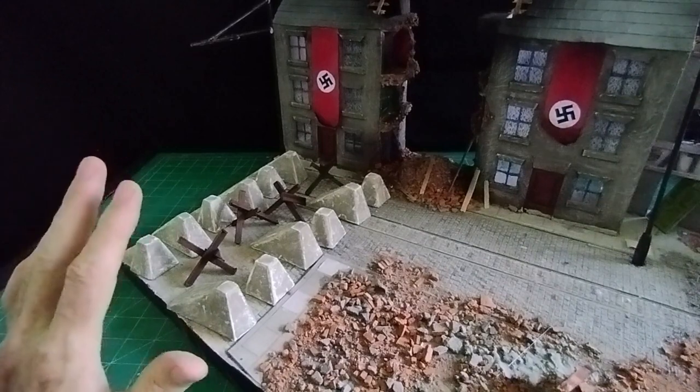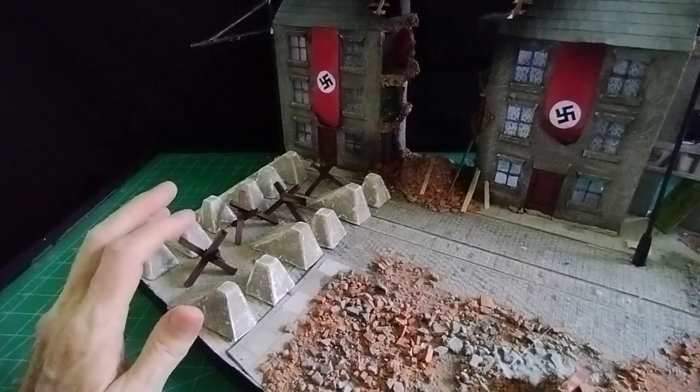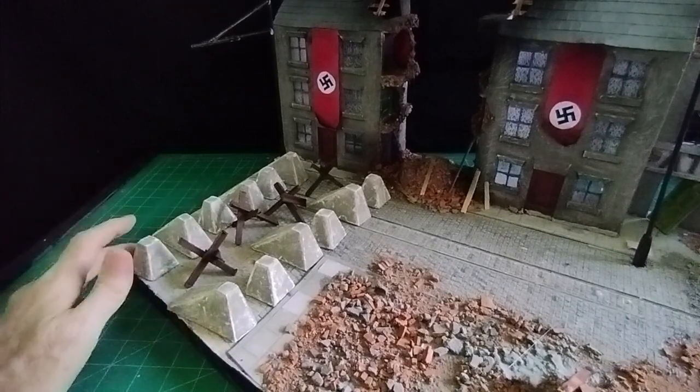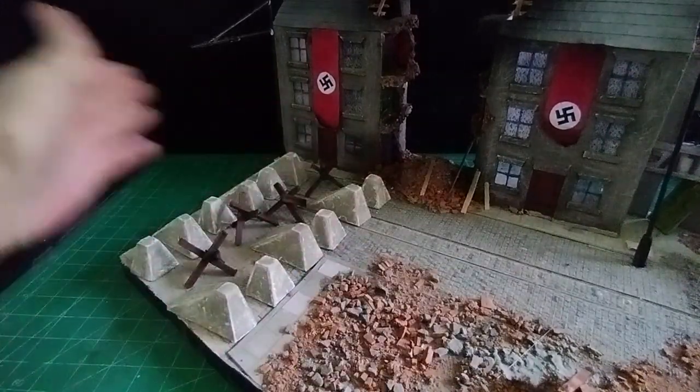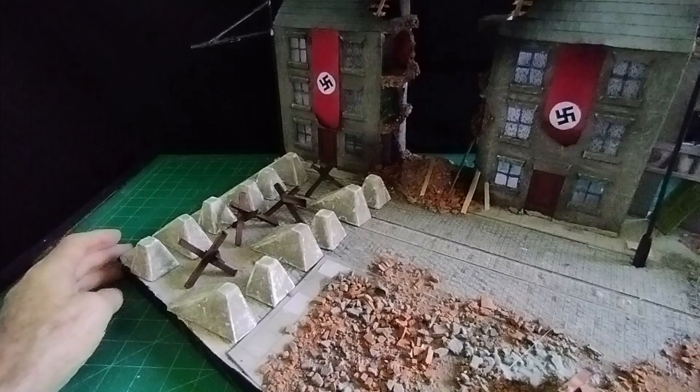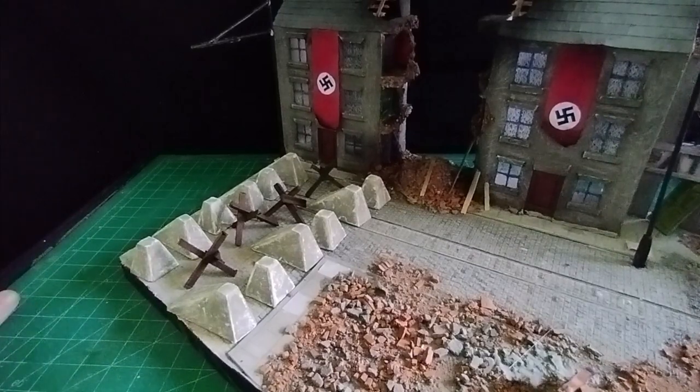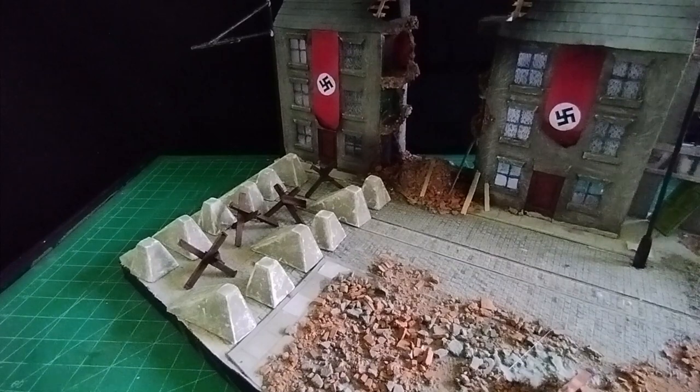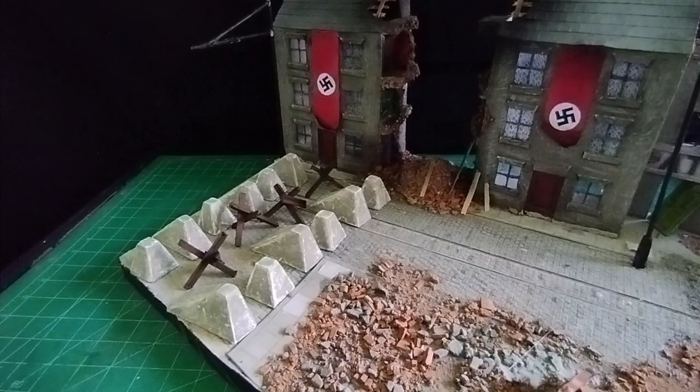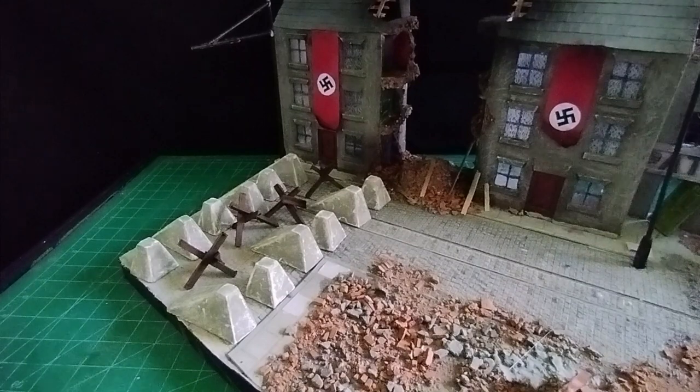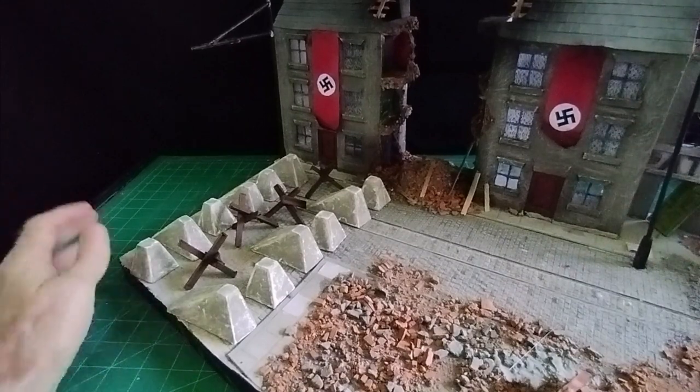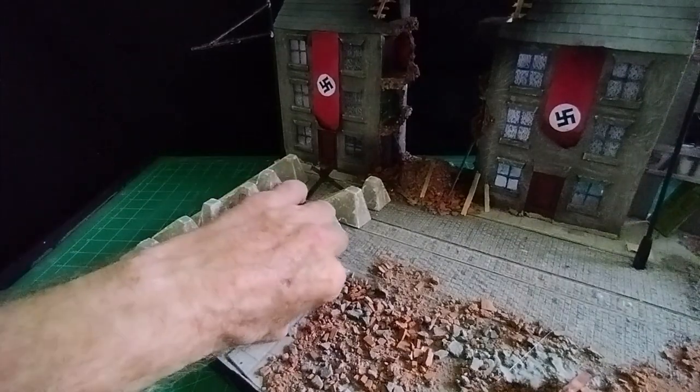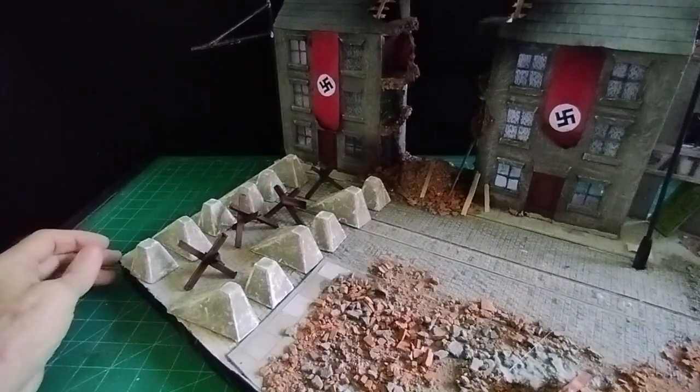So there we are - dragon's teeth and tank stops. I know you wouldn't have dragon's teeth like this in a city - the tank would just push them along the cobbled road. They were normally on border lines really, between Holland and Germany and Belgium and Germany, that's where most of them were I think.